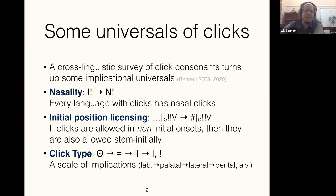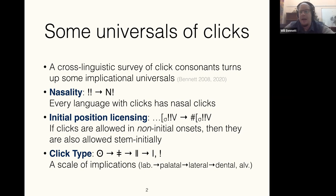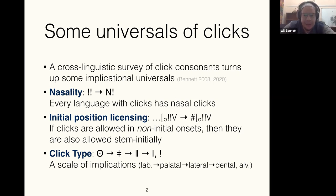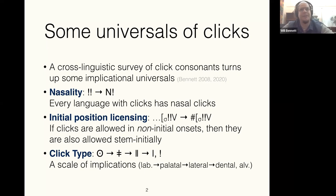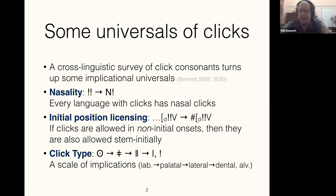There also seems to be an implicational scale or hierarchy among different types of clicks. Languages with bilabial clicks are few and far between — vanishingly rare. Every language we know of that has bilabial clicks also has several other types: palatal, lateral, dental, and alveolar. You tend to find a scale whereby if a language has palatals, it also has the ones further down. The overall sense across languages is that there are these implicational regularities.